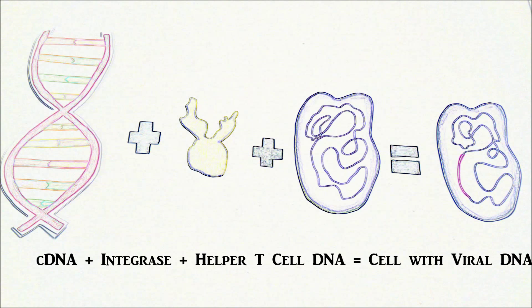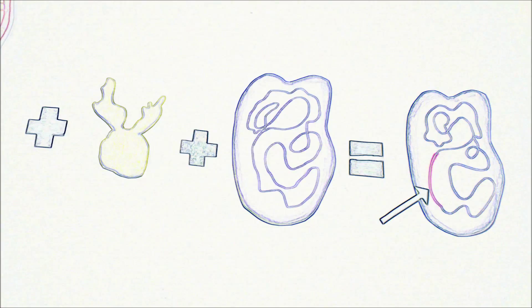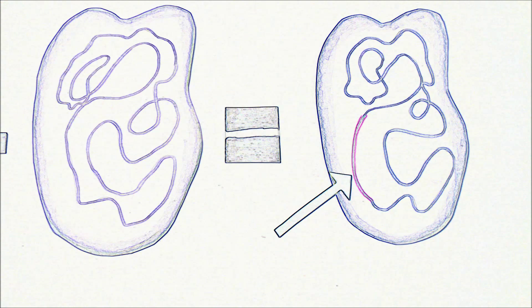Integrase cleaves a dinucleotide from each of the three prime ends of the DNA, allowing for the viral DNA to be incorporated with the helper T-cell's DNA.